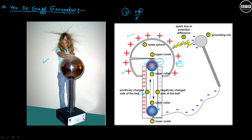The stored charge at high potential can be further used to accelerate charged particles. So the Van de Graaff generator is also used for nuclear reactions, where we need to accelerate charged particles.